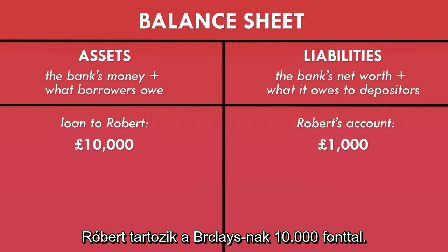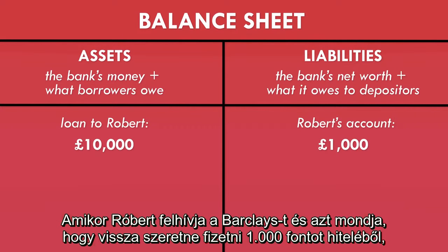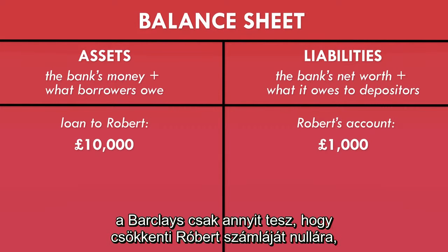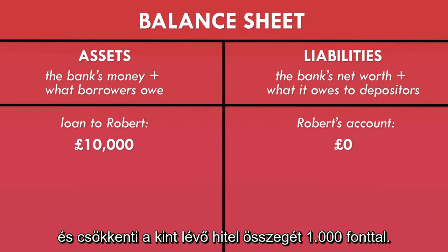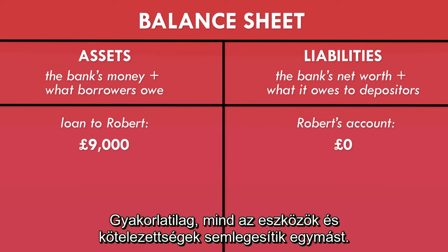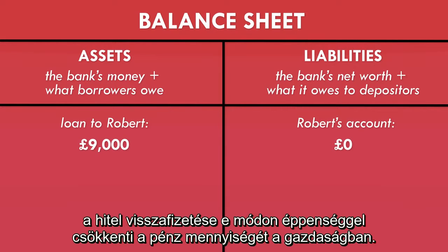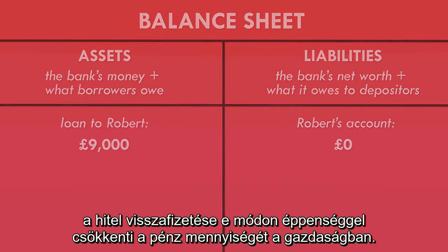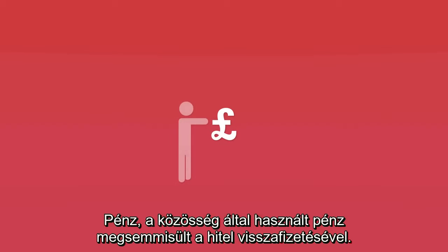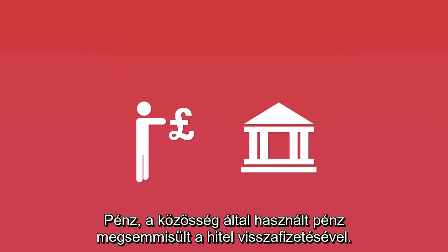And Robert has a liability to Barclays of £10,000. When Robert calls Barclays and says that he wants to pay off £1,000 of the loan, all Barclays does is reduce Robert's bank balance to zero and reduce the outstanding loan by £1,000. In effect, both the asset and the liability are cancelled out against each other. Because the money supply in the hands of the public is made up of bank-created numbers in people's bank accounts, repaying loans in this way actually reduces the amount of money in the economy. Money — the type of money that the public use — has been destroyed in the act of repaying the loan.